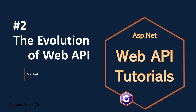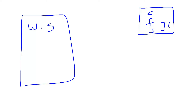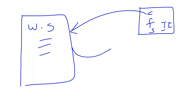Welcome back to web API tutorials. I am Venkat and this is part 2: the evolution of web API. Before discussing the evolution of web API, we need to discuss the evolution of web services. As you all know how web applications work — basically there is a web server and there are clients communicating with a browser. Any browser — Chrome, Firefox, Safari, IE — is a web client. From the browser we can request to the web server, the web server processes our request and responds back.